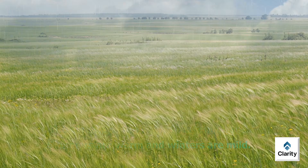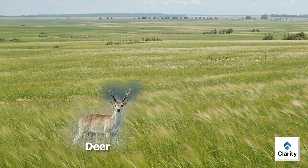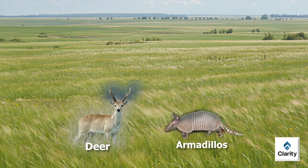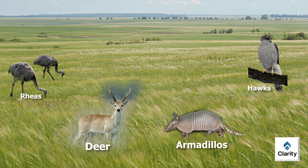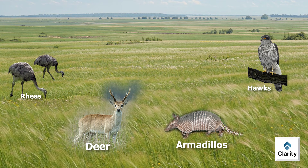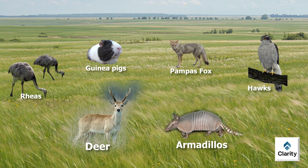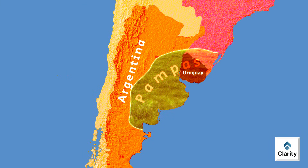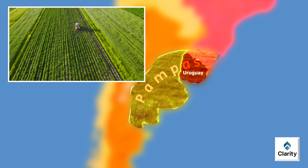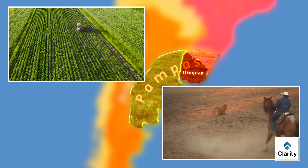The fauna of the Pampas includes mammals like deer and armadillos. Birds such as rheas and hawks are common. The region also holds rodents like guinea pigs and Pampas foxes. This grassland ecosystem supports extensive cattle ranching, and Pampas beef is famous globally for its quality. Today, the Pampas is an economic heartland for Argentina.